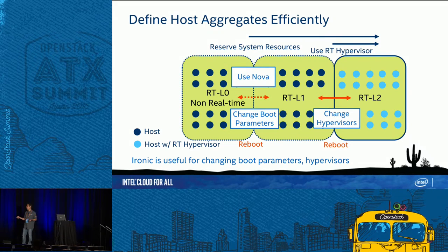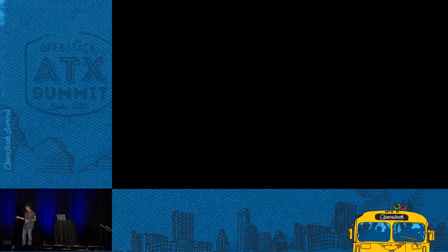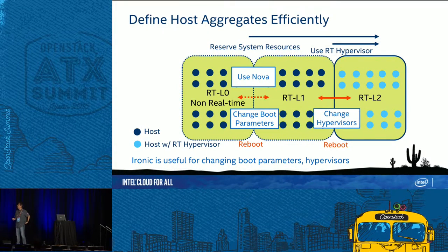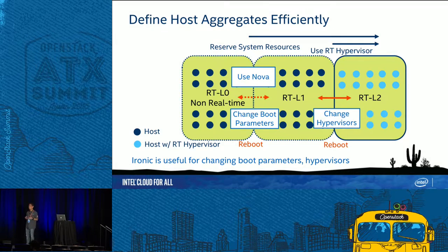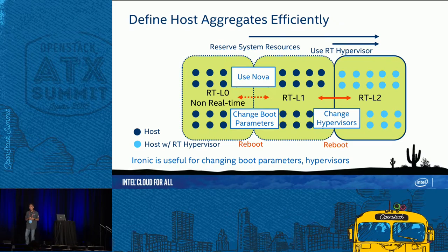If you move to L2 you need to change the hypervisor, which requires a reboot. Also, changing boot parameters when switching between L0 and L1 may require reboots too. This is a bit painful, but these configurations are mostly static — you're more likely to extend a partition than change it. Designing your host aggregates efficiently up front is important.